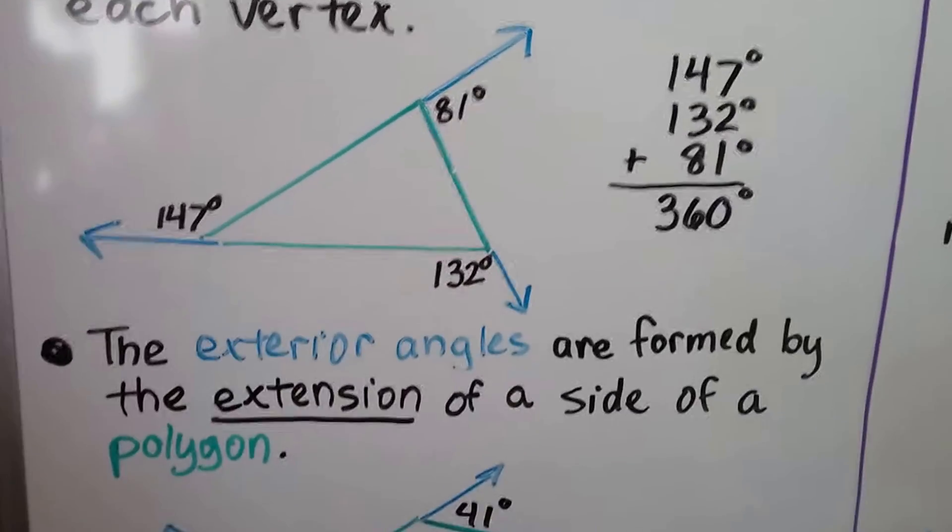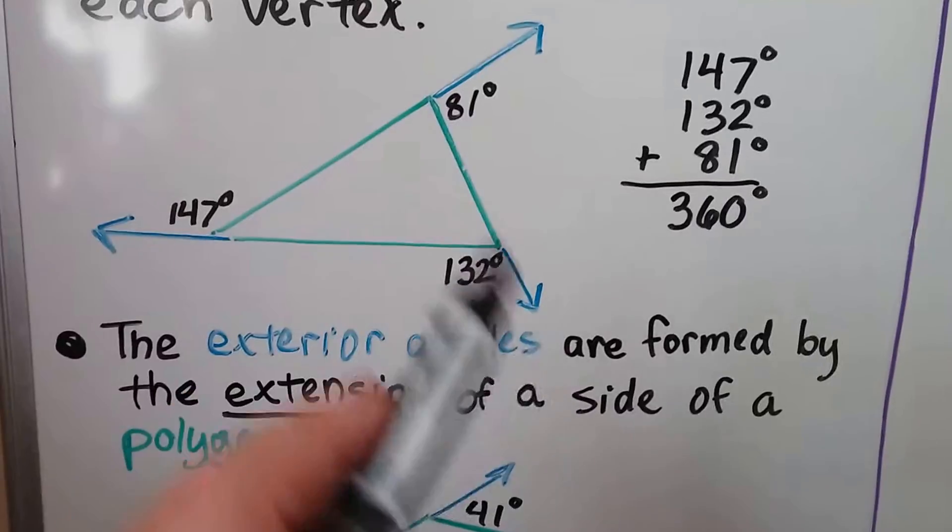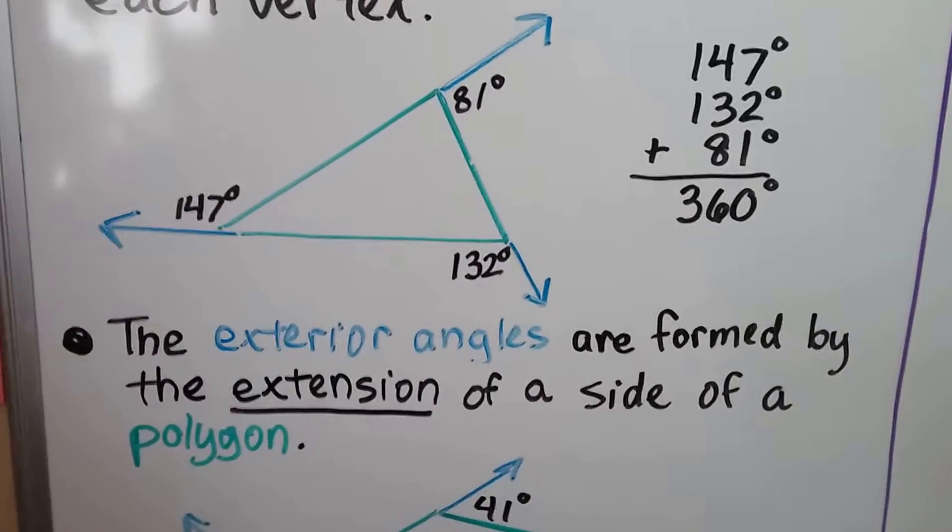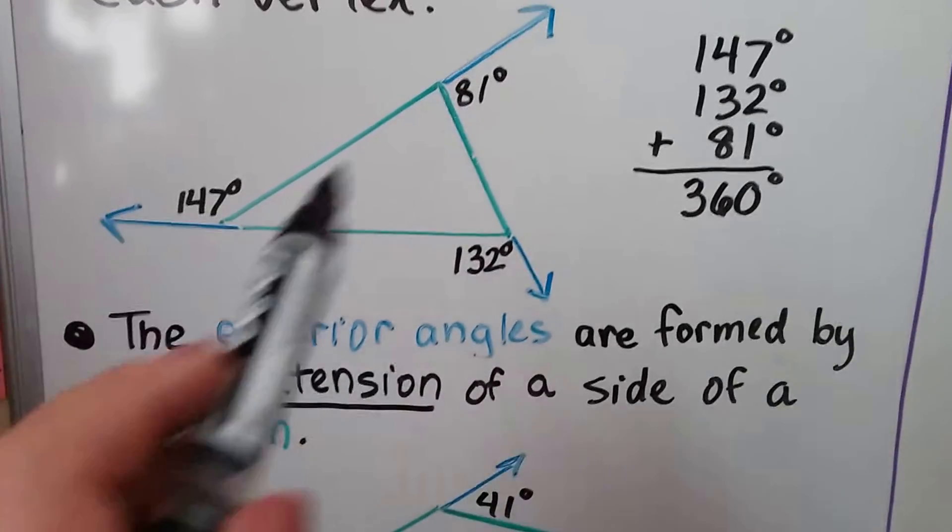And the exterior angles are formed by the extensions of a side of a polygon. See how we just extend it?